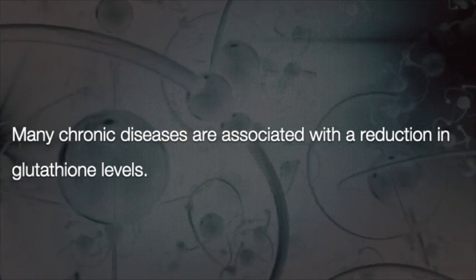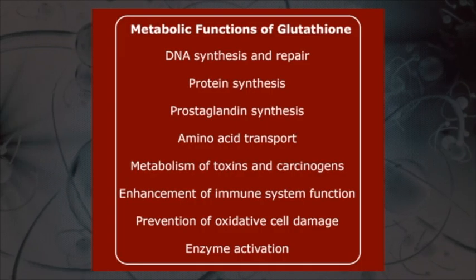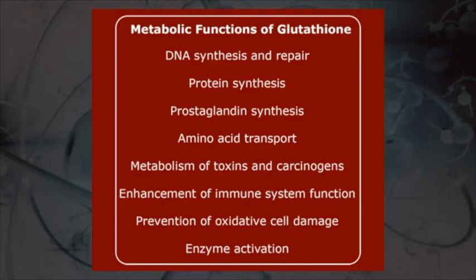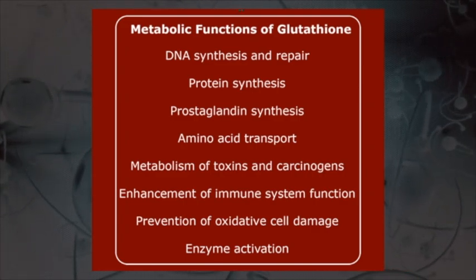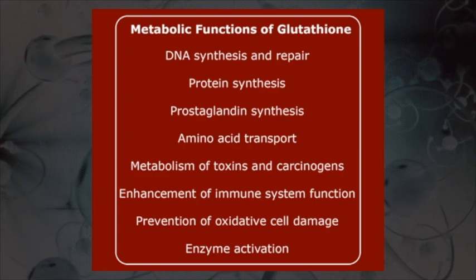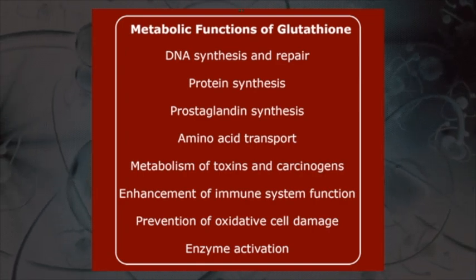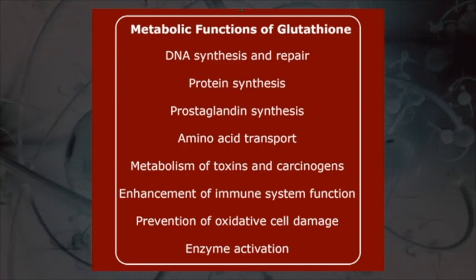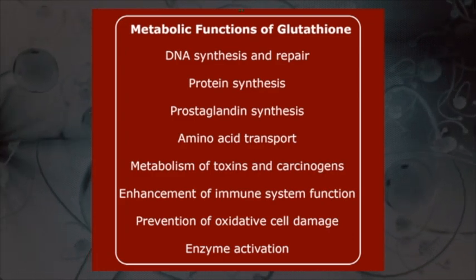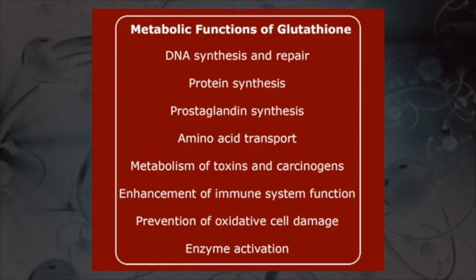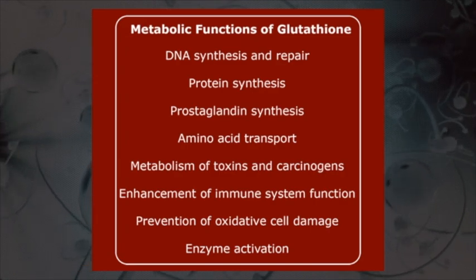There are many chronic diseases associated with a reduction in glutathione levels. To understand the disease side, we should know what the metabolic functions of glutathione are. These include DNA synthesis and repair, protein synthesis, prostaglandin synthesis, amino acid transportation, metabolism of toxins and carcinogens, enhancement of immune system function, prevention of oxidative cell damage through redox reactions, and enzymatic activation in cells.